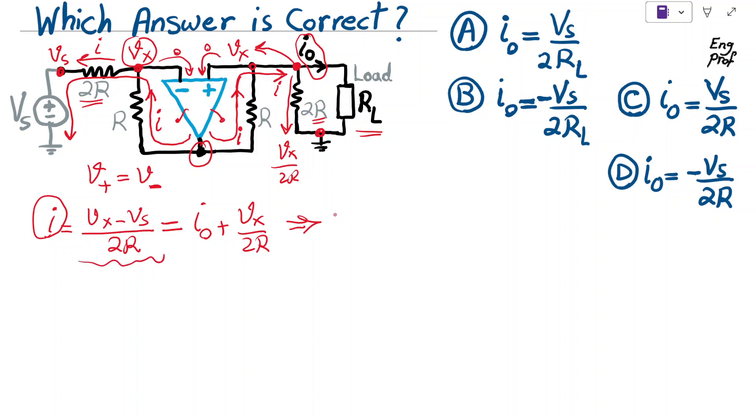On this side, I have Vx divided by 2R minus Vs divided by 2R equal to I0 plus Vx divided by 2R. You can see that these two cancel out each other. And as a result, we find that I0 is equal to negative Vs over 2R. So the right answer is D.